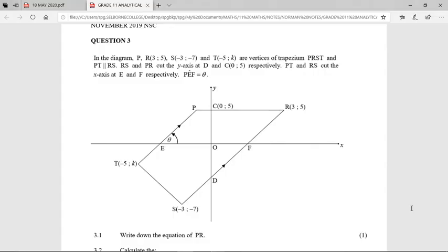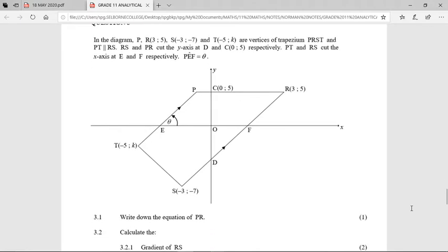Hey grade 11s, so the second exam question that you had to work through was from the November 2019 national paper. Question 3 says the following: in the diagram P, which they don't give you any coordinates for, and RS and PR cut the y-axis at D and C, which was 0 and 5, respectively. We should have known that as well anyway because that's the properties of a trapezium, one pair of parallel sides.